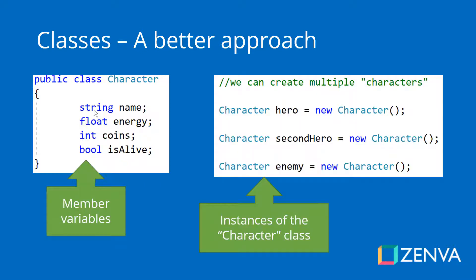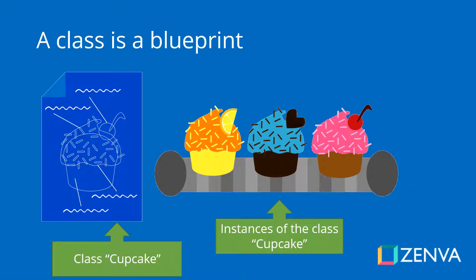We can then create instances of that character. What that means is, after we've defined the blueprint, we can use that blueprint to actually create multiple characters for our game. By using the name of the class as a data type, we can create variables that consist of new characters that we are creating. A class definition doesn't create any object — what actually makes things happen is when you create instances of that class.